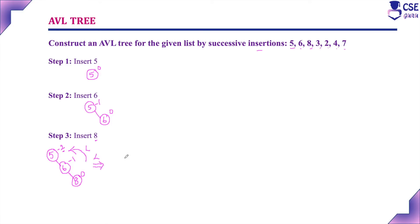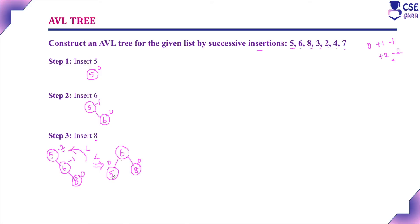We have to perform a rotation to convert the unbalanced tree into a balanced one. Since elements were inserted to the right side, a single left rotation is enough. Performing single left rotation: 6 becomes the root node, 5 becomes the left child of 6, and 8 remains the right child of 6. After rotation, check: 5 is less than root 6 (satisfied), 8 is greater than root 6 (satisfied). Balance factor for root 6 is 1 minus 1 = 0. This is now a balanced AVL tree.